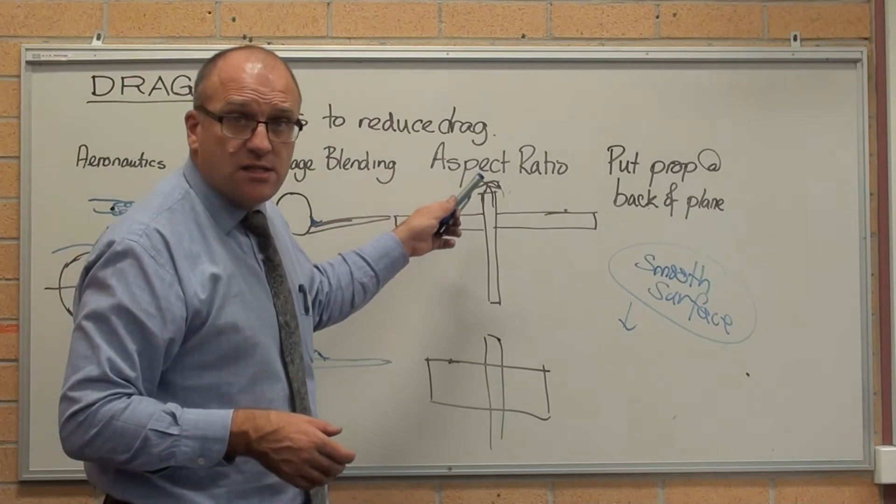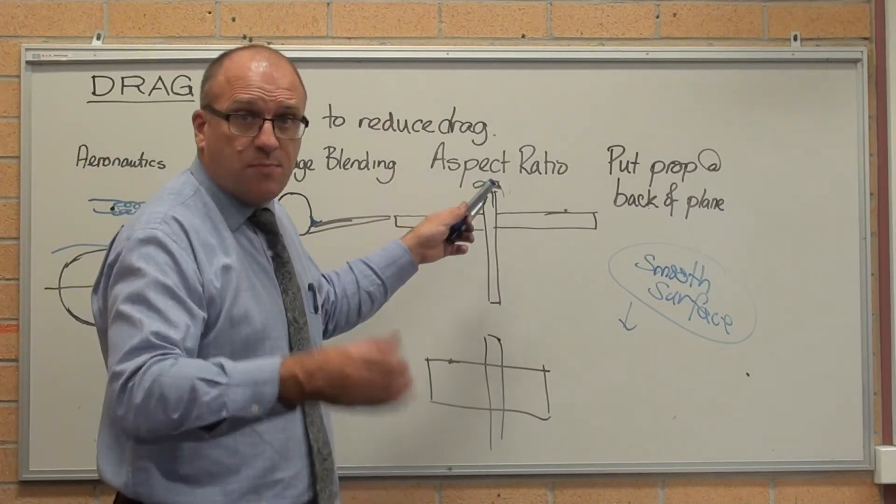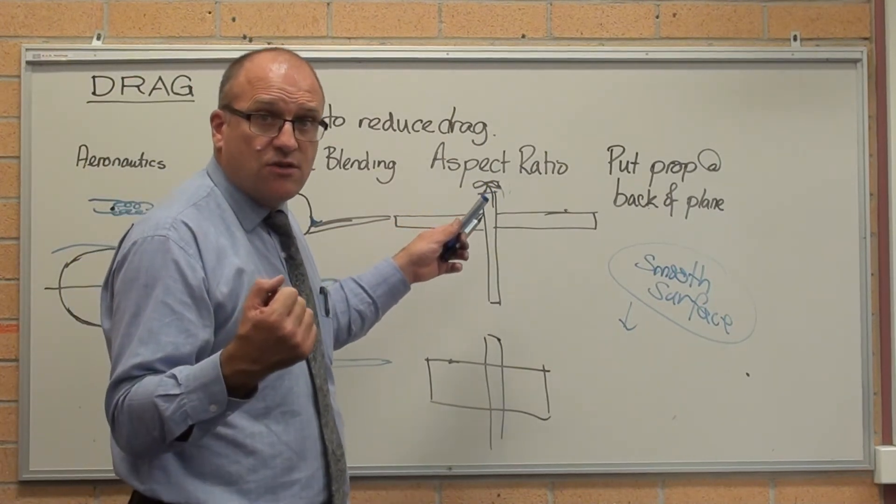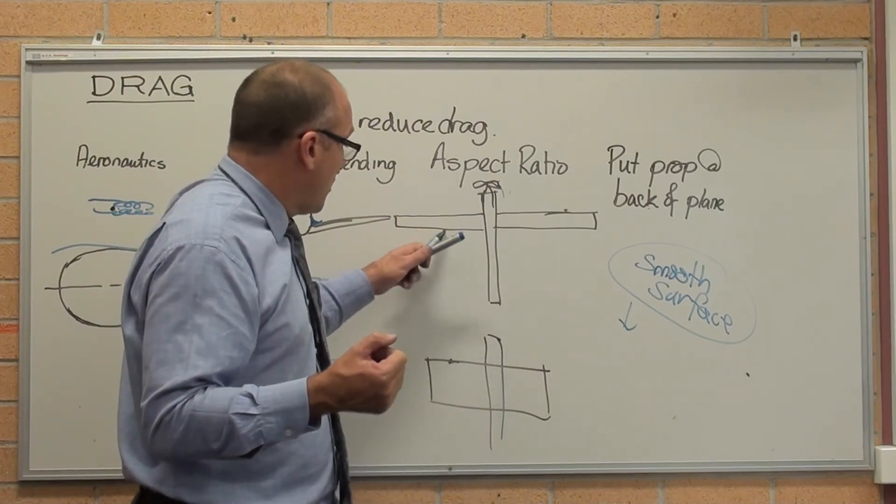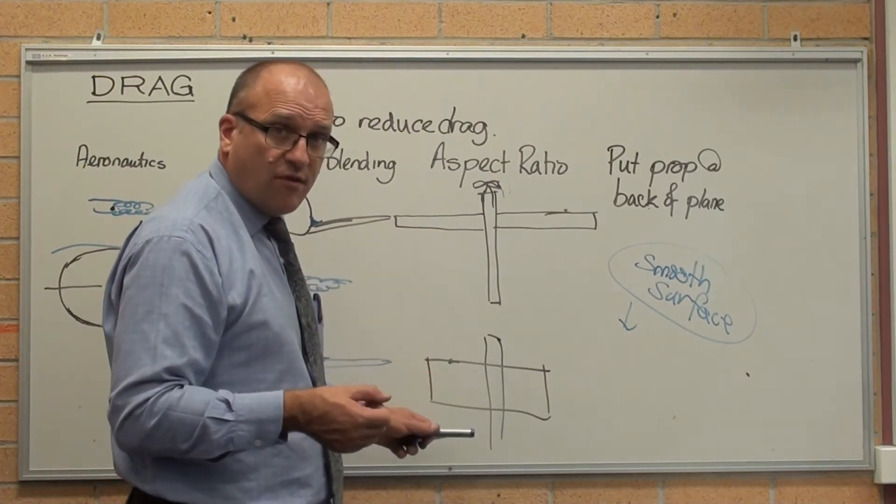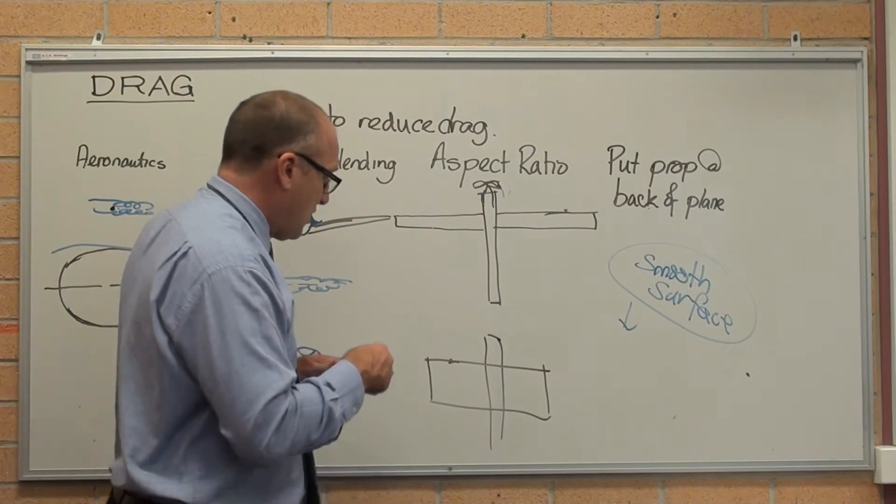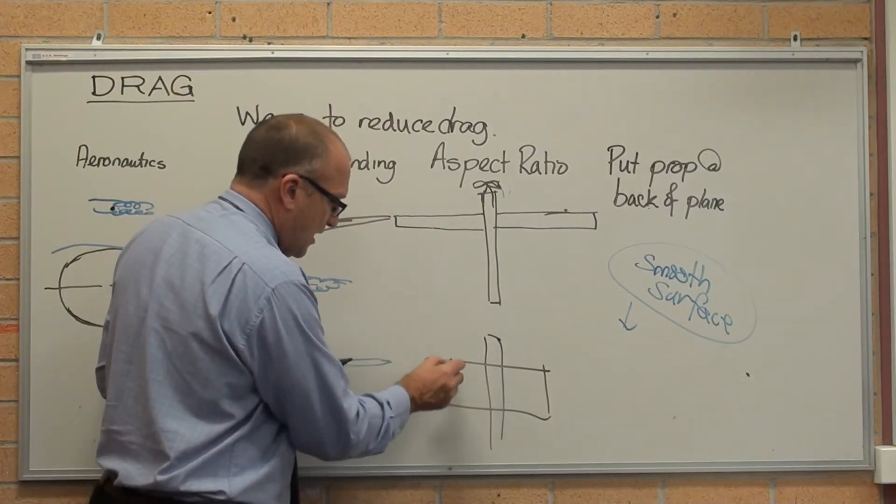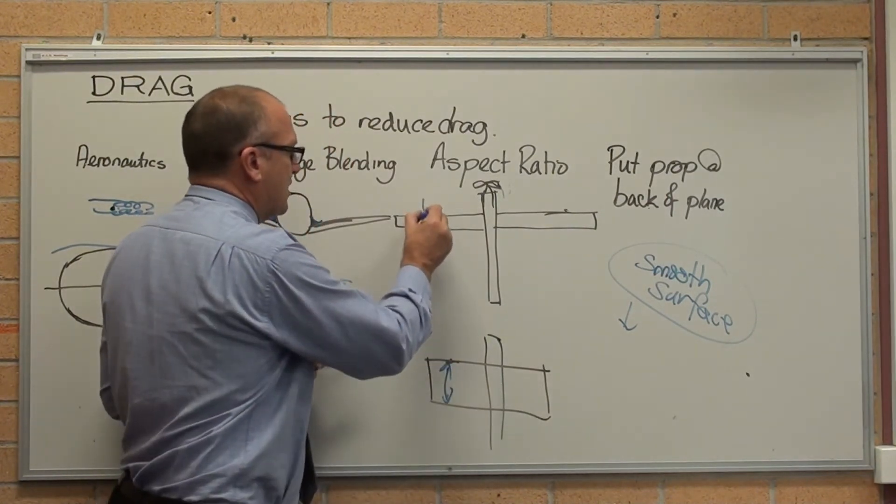Aspect ratio of wings is important. We spoke earlier about the induced vortex drag. The longer the air passes over a wing, the bigger the vortex. So that is going to create a lot more vortex than that.